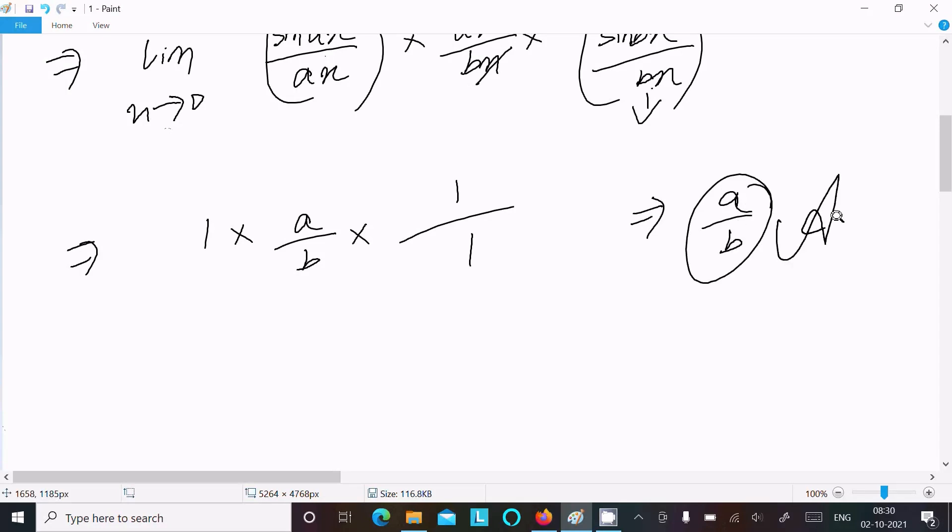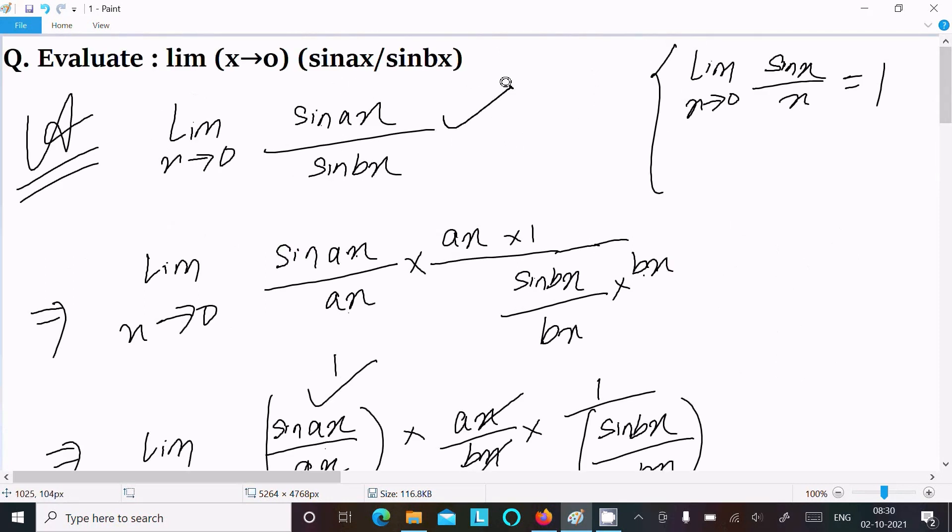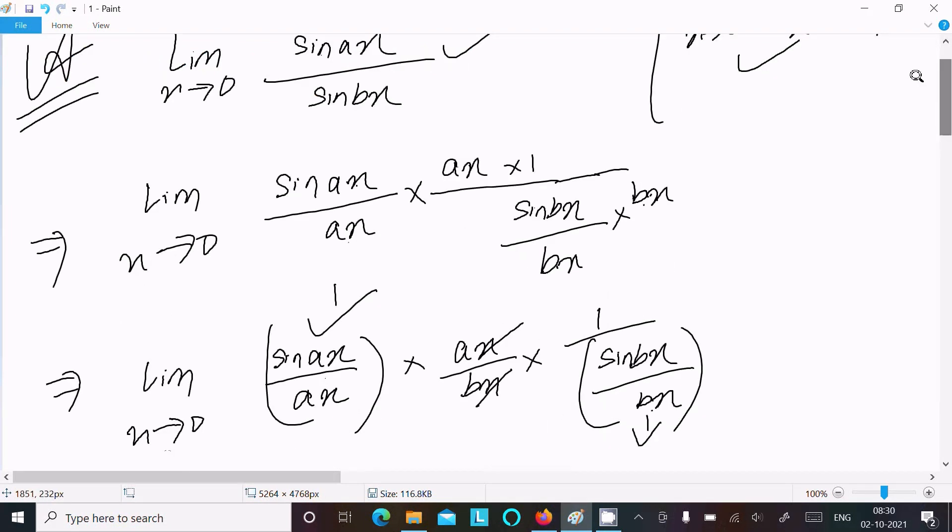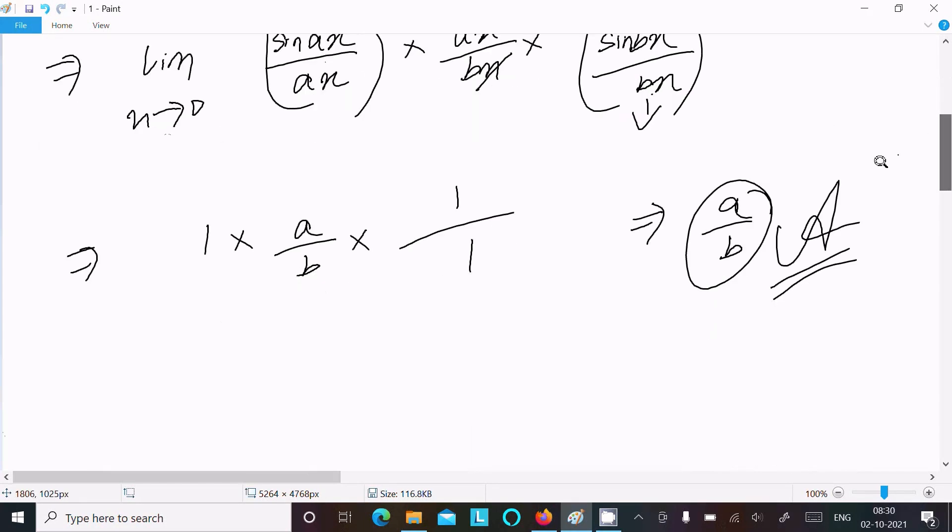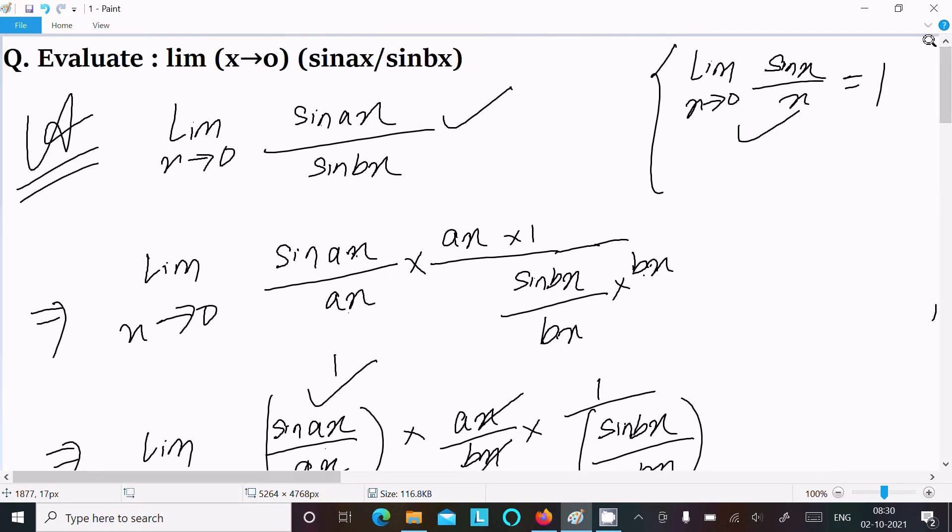One time going to repeat: write the given, this is the theorem you should use. And here we need to make that sin(ax) by ax form, so ax divided by ax multiplied here. With sin(bx), bx divided by bx, multiply. There is no any effect, this cancels. After that, combine this and here you can get these terms. So this returns 1 and here x, x cancels. Finally you get a by b.